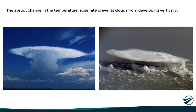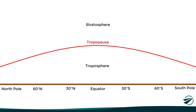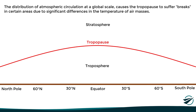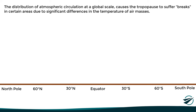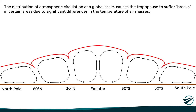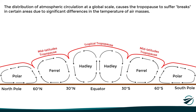Taking into account all we have seen so far, we could think that the altitude of the tropopause changes gradually and continuously between the equator and the poles. However, in reality things are a little different, since the distribution of atmospheric circulation at a global scale causes the tropopause to suffer breaks in certain areas due to significant differences in the temperature of air masses. Atmospheric circulation within the troposphere is divided into different cells: the ones closer to the equator are known as the Hadley cells, the ones in mid-latitudes are the Ferrel cells, and the ones over the poles are called polar cells. With this distribution, instead of having a single tropopause, we end up with individual tropical, mid-latitude, and polar tropopauses.